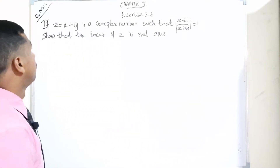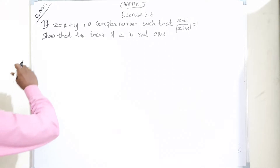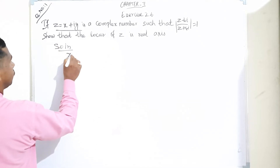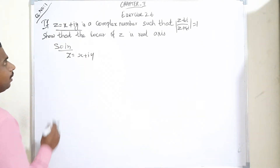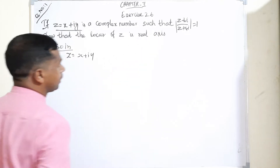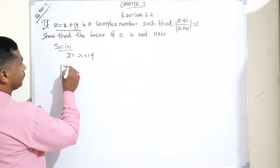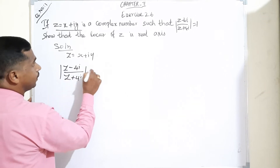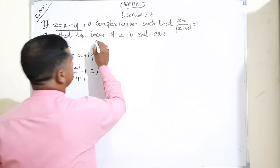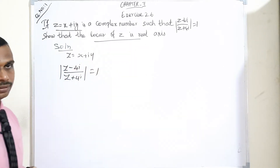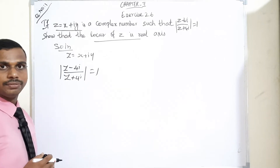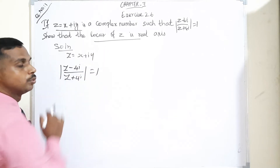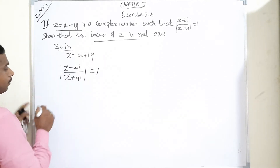What is given in the question? z is equal to x plus i y, a complex number, such that modulus of z minus 4i divided by z plus 4i is equal to 1. Show that the locus of z is the real axis. Real axis means the answer has no imaginary part. They are given clearly.